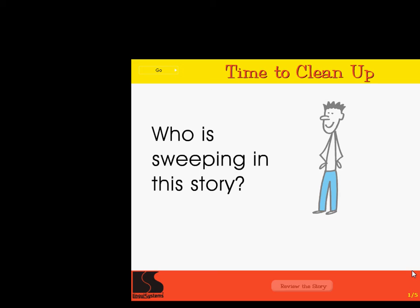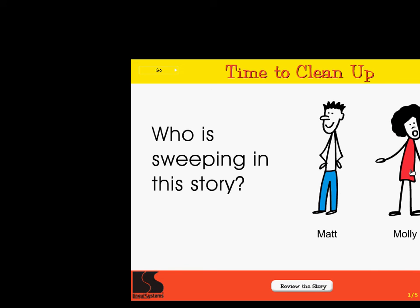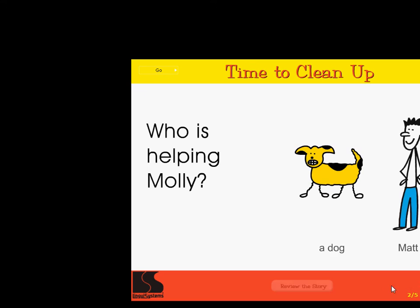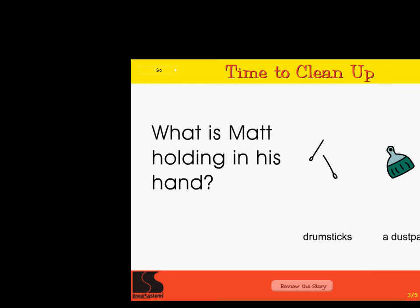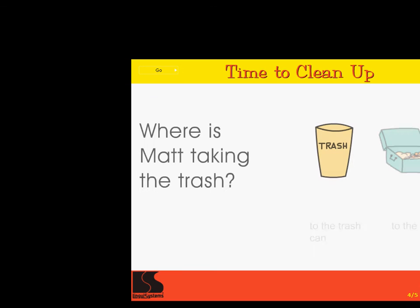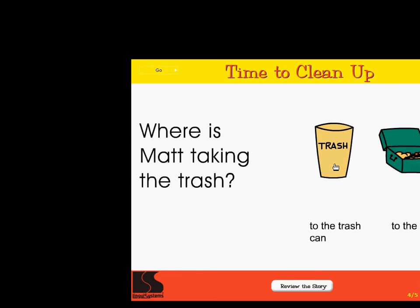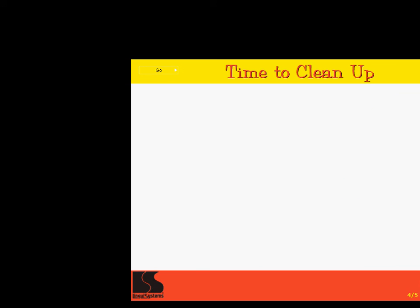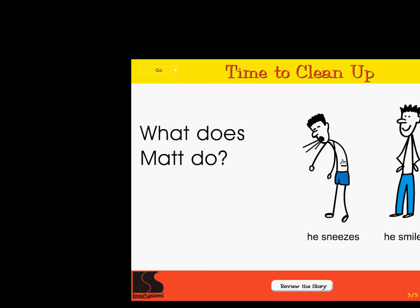Who is sweeping in this story? Matt. Molly. Excellent! Who is helping Molly? A dog. Matt. Correct! What is Matt holding in his hand? Drumsticks. A dustpan. Super! Where is Matt taking the trash? To the trash can. To the chest. Right on! What does Matt do? He sneezes. He smiles. Wow.